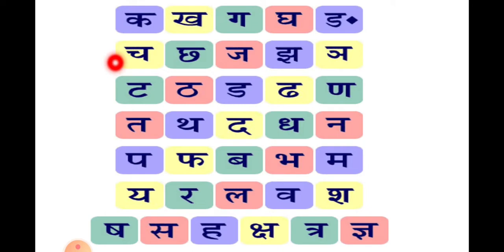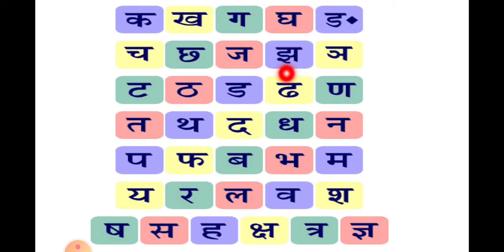Next line — चवर्ग। च से चमच। छ से छाता। ज से जहाज। झ से झंडा।